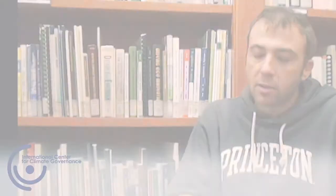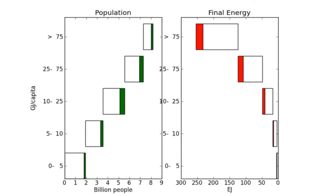What we have in this chart is on the left a chart about population, and on the right a chart about energy. On the vertical axis you see the five categories I just described. The chart on the left tells you how many people now and in the future — by 2030, about 15 years from now — live and reside in each of these categories, these bins.